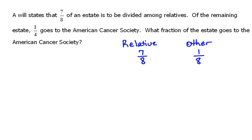Now, look at what this says here. It says of the remaining estate, which would be this other amount here, 1/4 goes to the American Cancer Society. So we're talking about 1/4 of the remaining estate, which we determine to be 1/8.